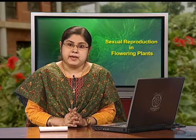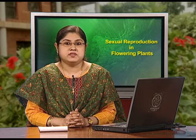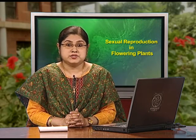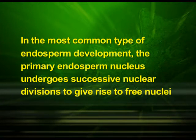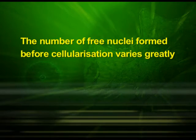Endosperm development happens before embryo development. The primary endosperm cell divides repeatedly and forms a triploid endosperm tissue. The cells of this tissue are filled with reserved food materials used for the nutrition of the developing embryo. In the most common type of endosperm development, the primary endosperm nucleus undergoes successive nuclear divisions to give rise to free nuclei — a stage called free nuclear endosperm. Subsequently, cell wall formation occurs and the endosperm becomes cellular.